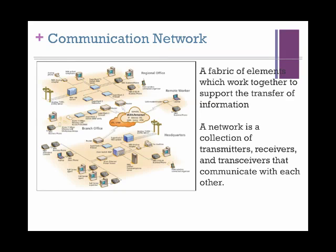Let's start with telecommunication networks. A communication network is a fabric of elements which work together to support the information flow, or rather the transferring of a signal. It is a systematic collection of transmitters, receivers, channels, and sometimes transceivers that allow communication with one another. It is often the case that repeaters or amplifiers are used to recreate and forward the signal if distances are long, because the chances of attenuation increase and the power of the signal weakens along the way.